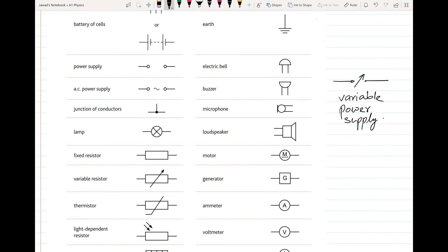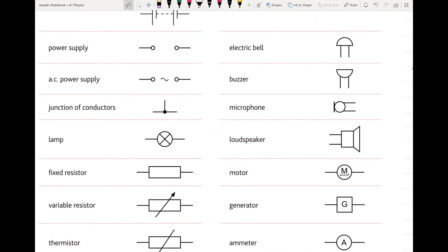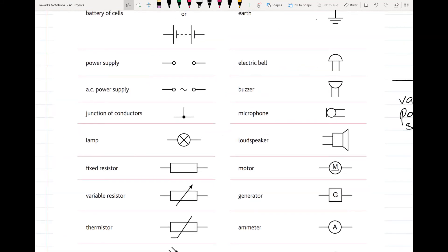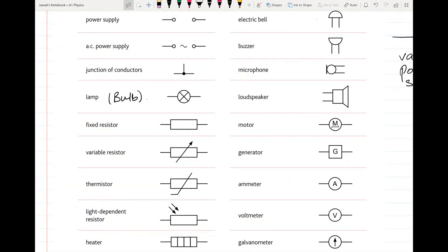Junction is a point where more than two wires meet or are connected - not crossing, but connecting at that point. Next one is lamp - you commonly use the name bulb. Then there is a simple resistor, also called fixed resistor or ohmic conductor, because it follows Ohm's law at all conditions. Its resistance remains constant throughout.